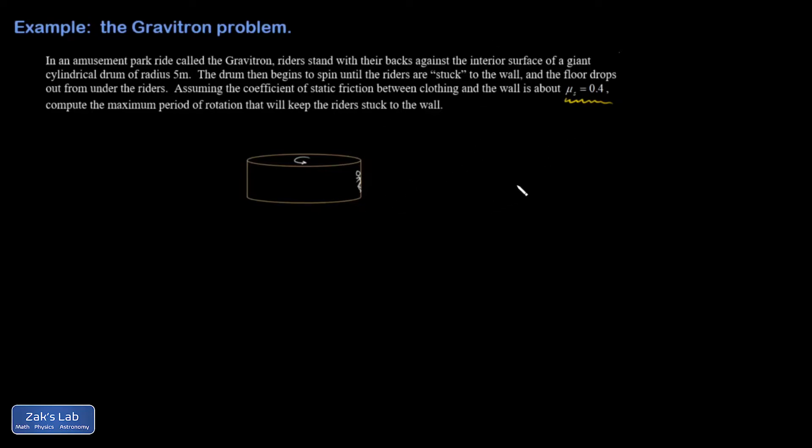So we're going to try to do a force analysis here and figure out what's the maximum period of rotation. In other words, how slow can it go before people just start to slide down the wall? So a couple of key features here: I have a radius of 5 meters. I'm wondering what's the maximum period, the most time it could take for a rotation before people start to slide down the wall?